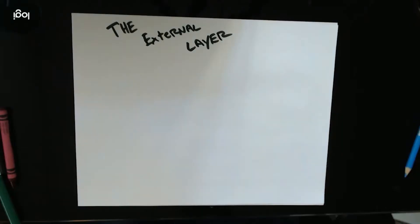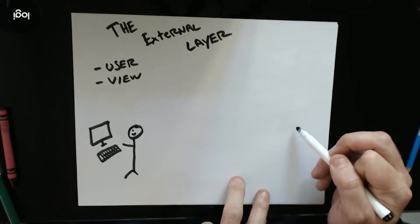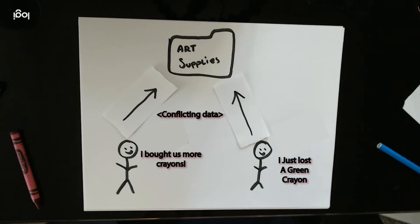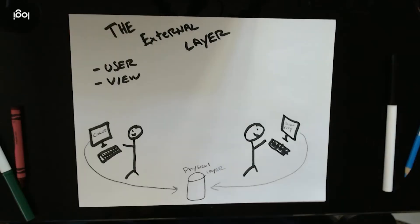The external layer in the database system consists of the user and the data extracted from the physical layer. However, this can still cause confliction in data as it did with the art supply file and needs an intermediary layer between the user and the data.